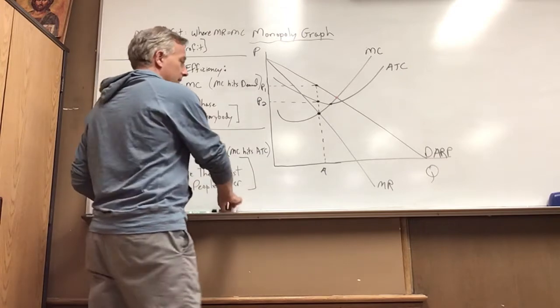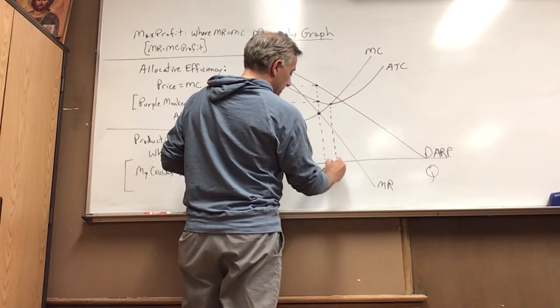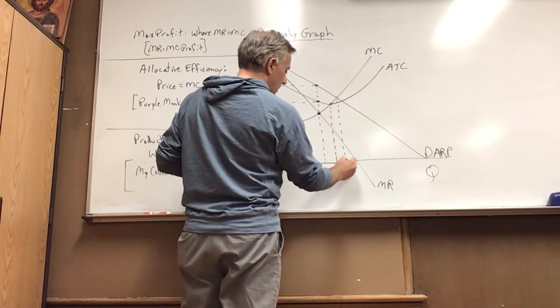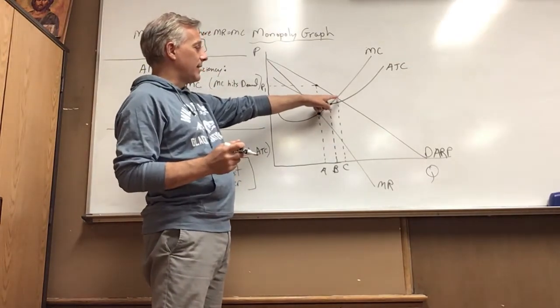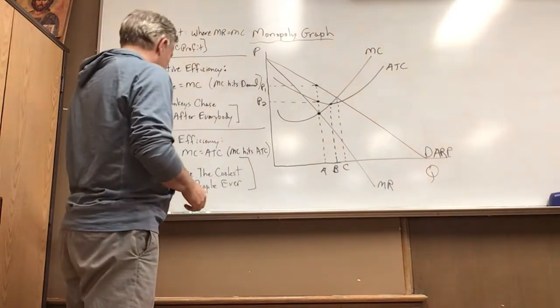I'm going to make this quantity here quantity B, and we're going to talk about that later. This quantity here is quantity C. That's the quantity that's allocatively efficient. That would be the price - we don't need to worry about what the price would be there, but we do want to color in this region here, which most of you know by now is deadweight loss.